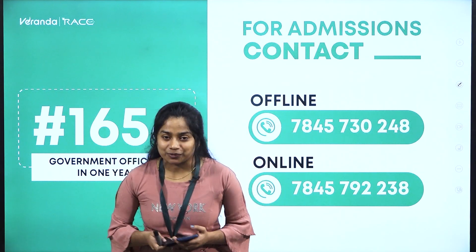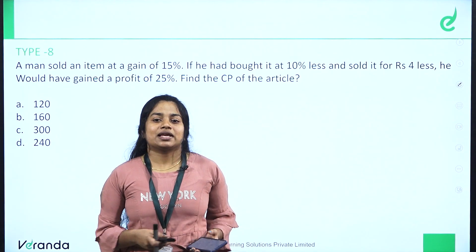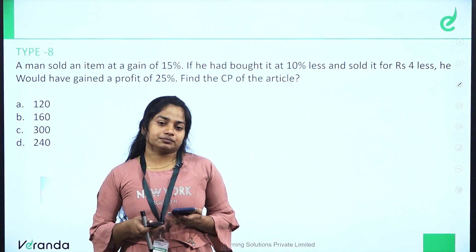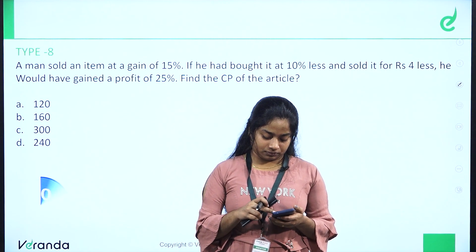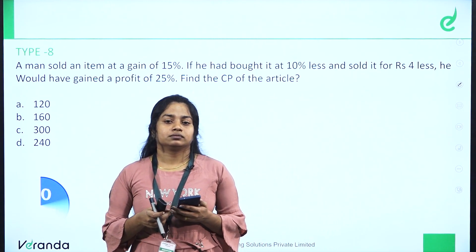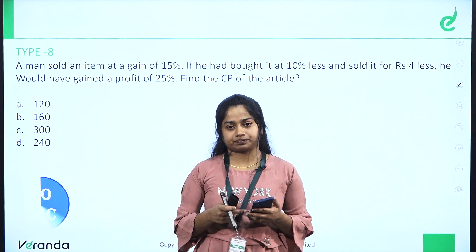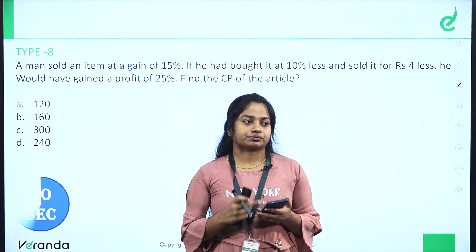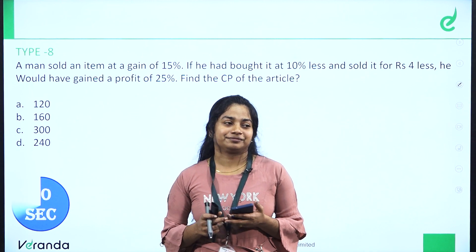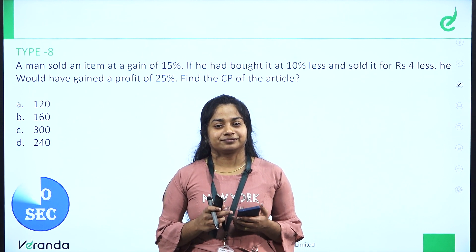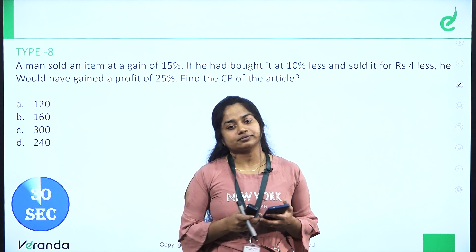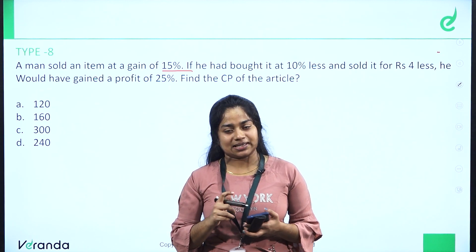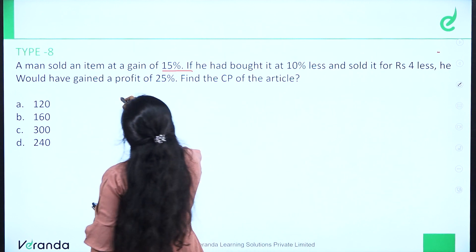So we will have the next question. The timer starts. This is a different type of question. A man sold an item at 15% profit. We will have 100% of the cost.